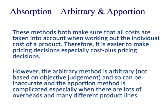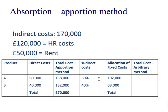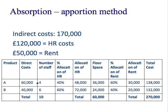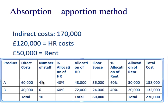In some ways the apportion method is still quite arbitrary. In this example, one department had four members of staff and the other had six, so the larger department got the higher allocation of HR costs. But how do we know that warranted a higher allocation? These six people might be a really high-performing team with no problems. The four people in the other department might have really high labour turnover, disciplinary problems — there might be no end to the problems. So it might not make sense to apportion the costs based purely on headcount.